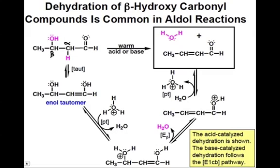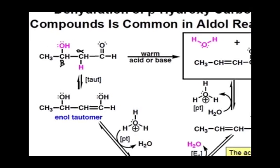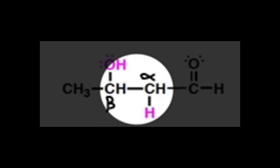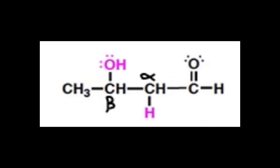In the last webcast, we were introduced to the aldol addition reaction. With our new knowledge of this transformation, we should be able to recognize how this carbon-carbon bond was formed between the alpha and the beta carbon. We should recognize that it's a beta-hydroxycarbonyl compound, and therefore this carbon-carbon bond was likely formed in an aldol addition reaction.